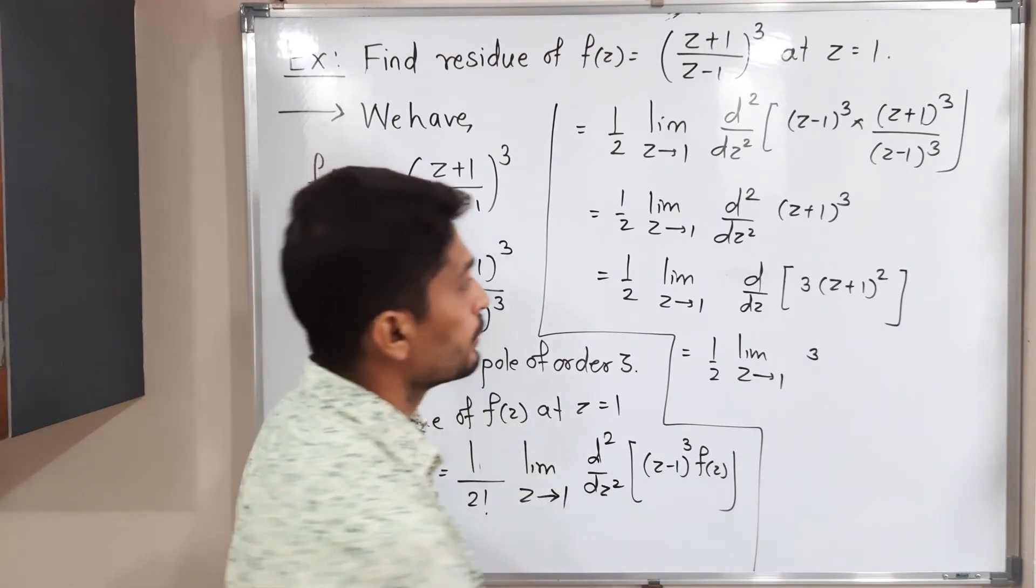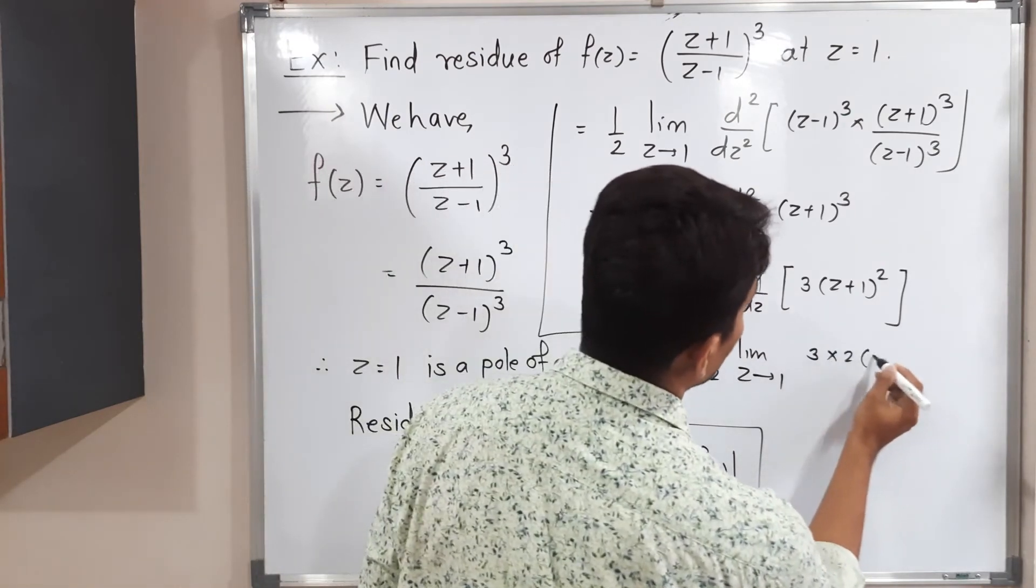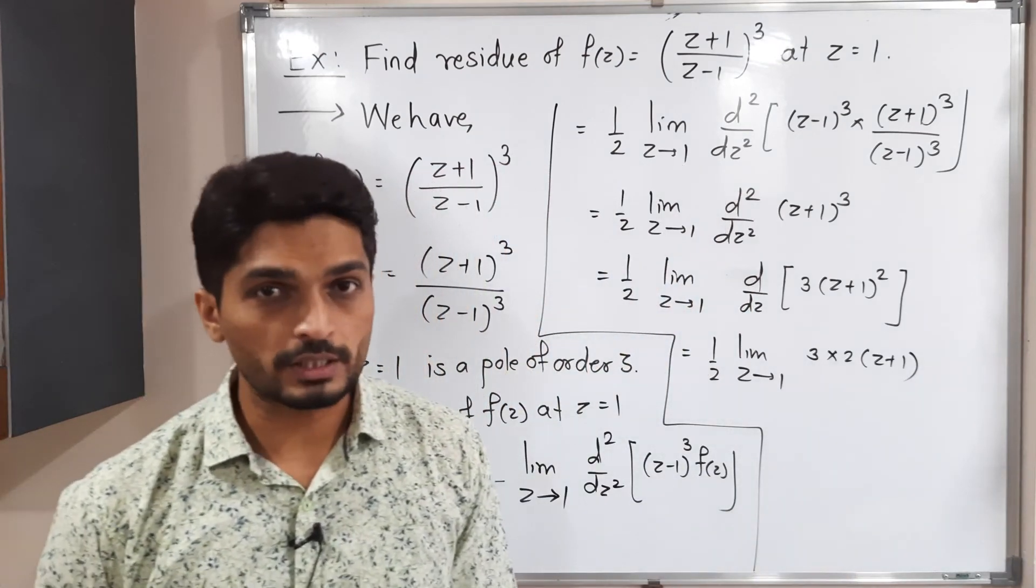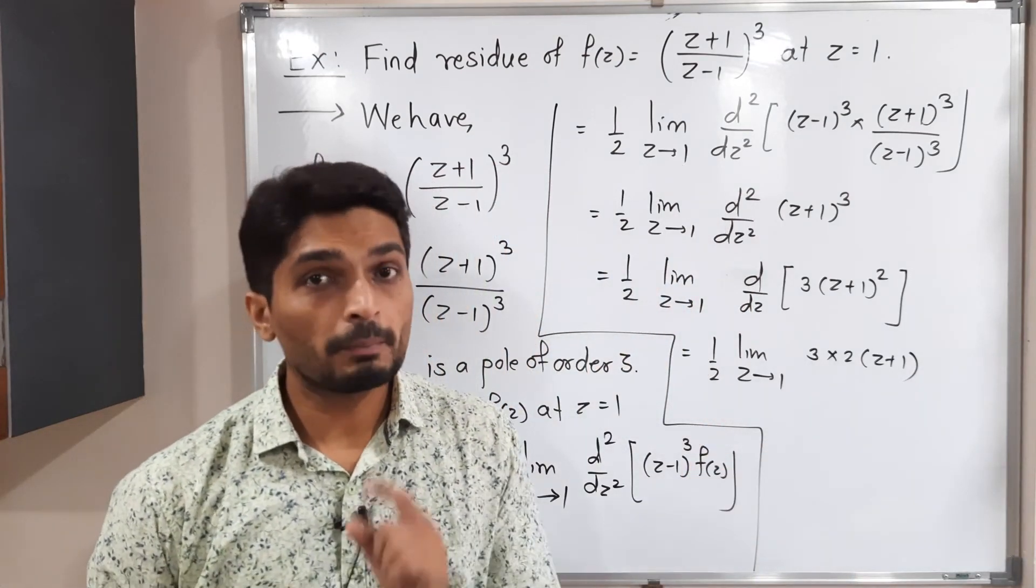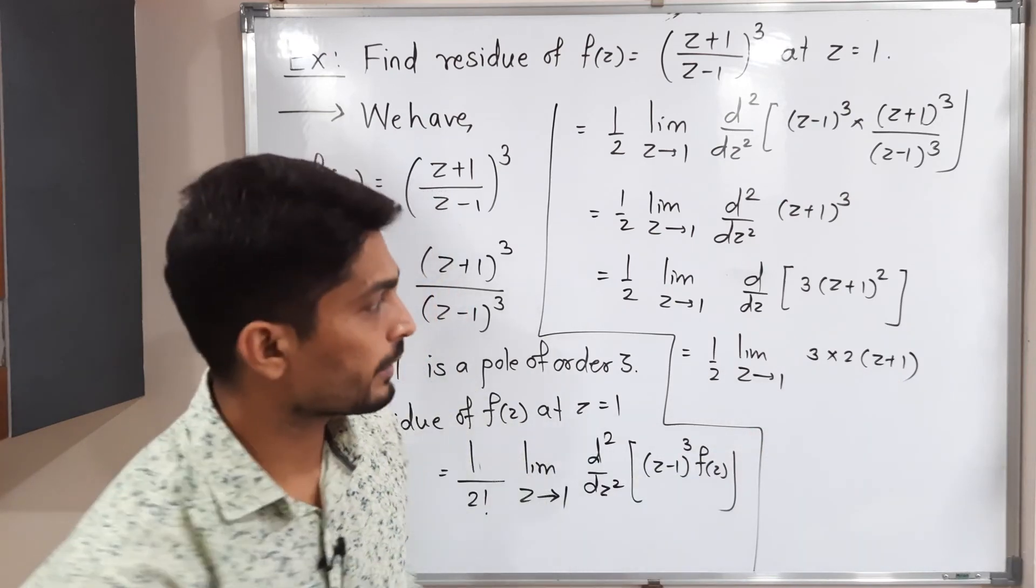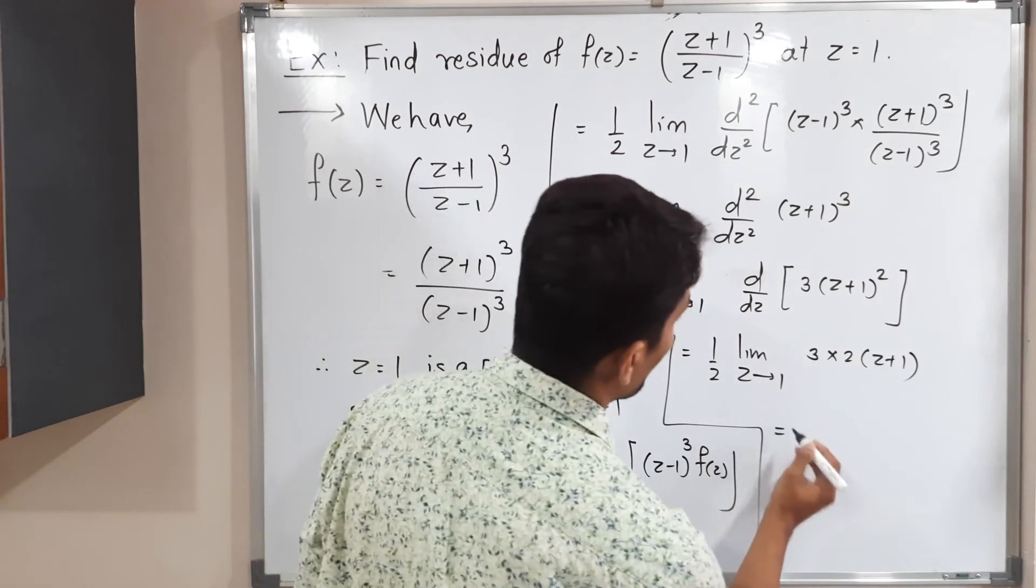Derivative of bracket will be 2. Let me write here 2(z plus 1). Since derivative of z square is 2z, the same thing we have got. But again by chain rule we have to take derivative of this bracket which is 1, so I will skip that part.